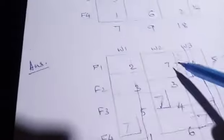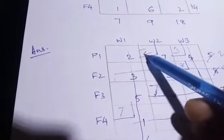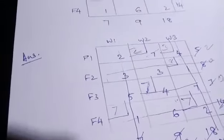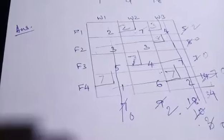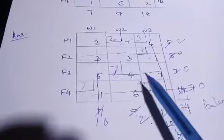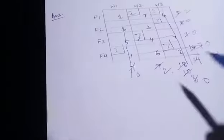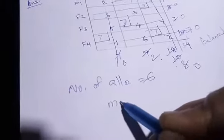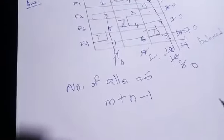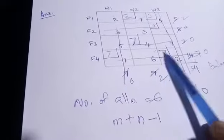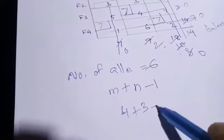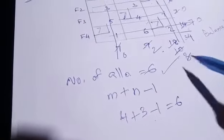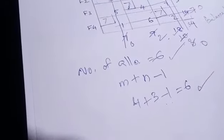The final allocation is 2 for the remaining cell, and that row is also removed. All allocations are now complete. We check whether this is the initial feasible solution: the number of allocations is 6, and m plus n minus 1 equals 4 plus 3 minus 1, which is also 6. Since the number of allocations equals m plus n minus 1, this is the initial feasible solution.